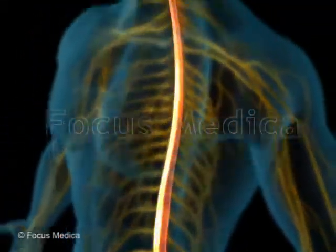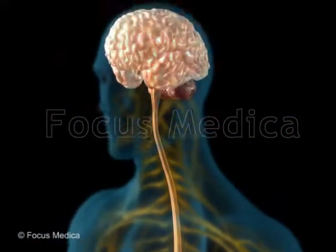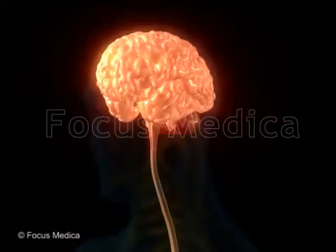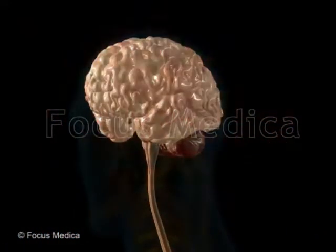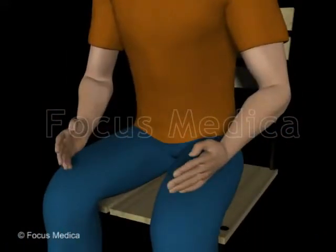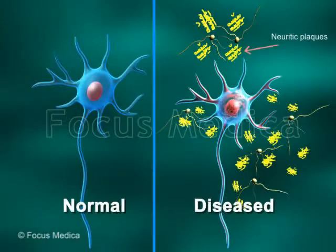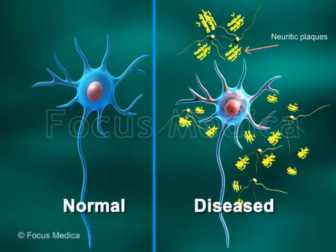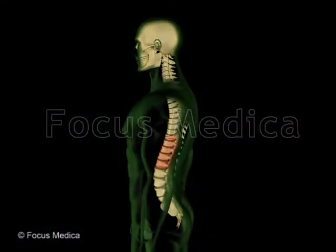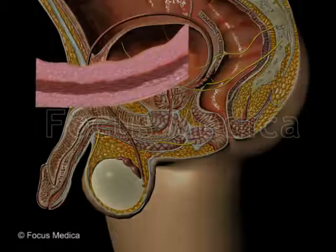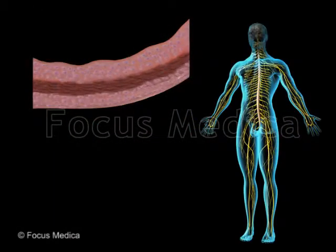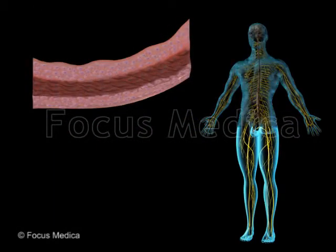The neurogenic cause is attributed to neurological diseases such as Parkinson's disease, Alzheimer's disease, or spinal cord injury, where the detrusor overactivity is linked to a damaged central nervous system.